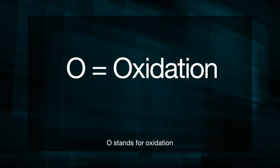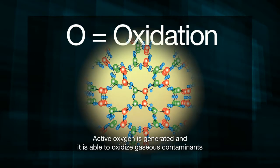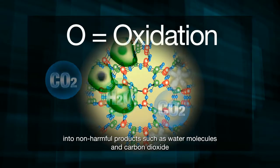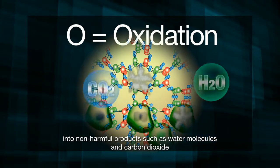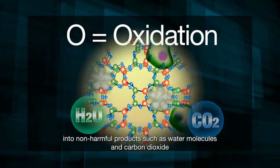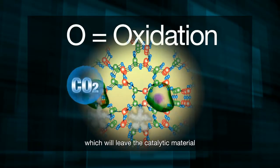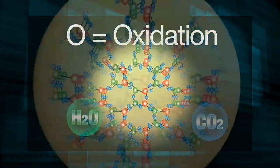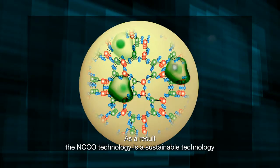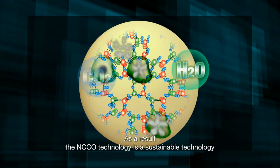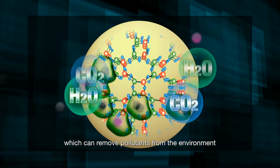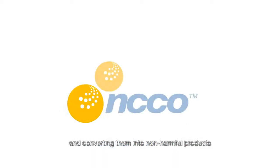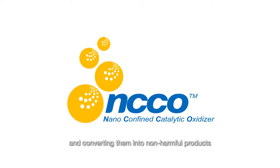O stands for oxidation. Active oxygen is generated and oxidizes gaseous contaminants into non-harmful products such as water molecules and carbon dioxide, which leave the catalytic material and regenerate another site for pollutant absorption. As a result, NCCO technology is sustainable, removing pollutants from the environment by trapping them inside the catalytic material and converting them into non-harmful products.